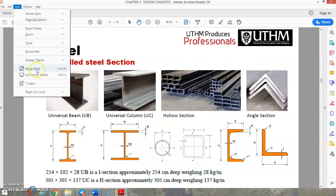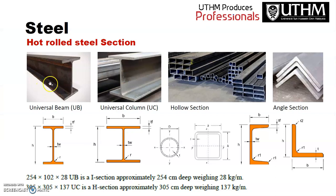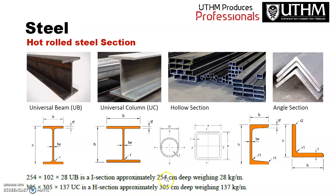Hot-rolled steel sections commonly used include the universal beam (UB), universal column (UC), hollow sections, and angle sections. For example, a 254×102×28 UB is a universal beam with 254 mm depth, 102 mm width, and a weight of 28 kg per meter — it has an I-section profile.